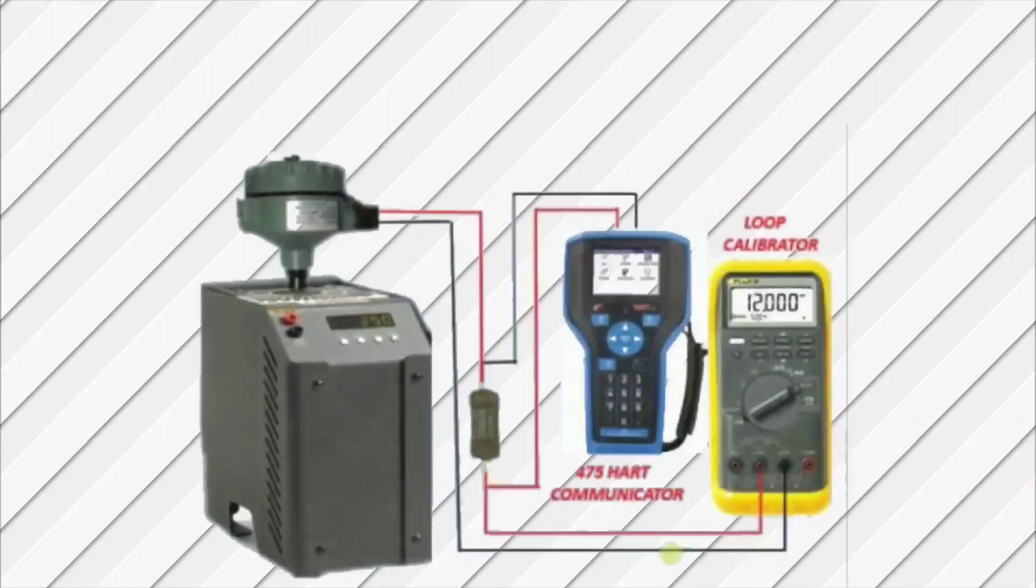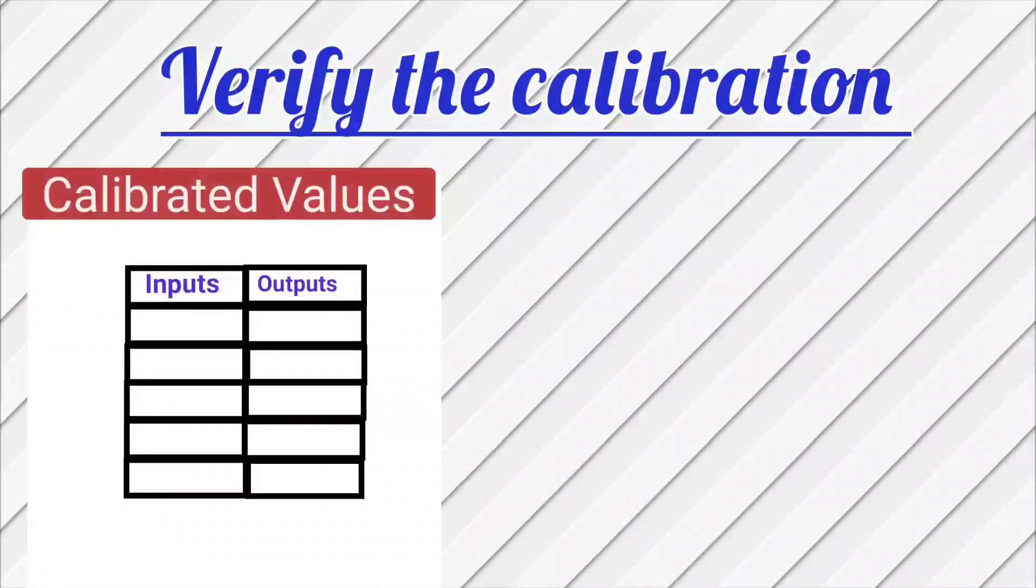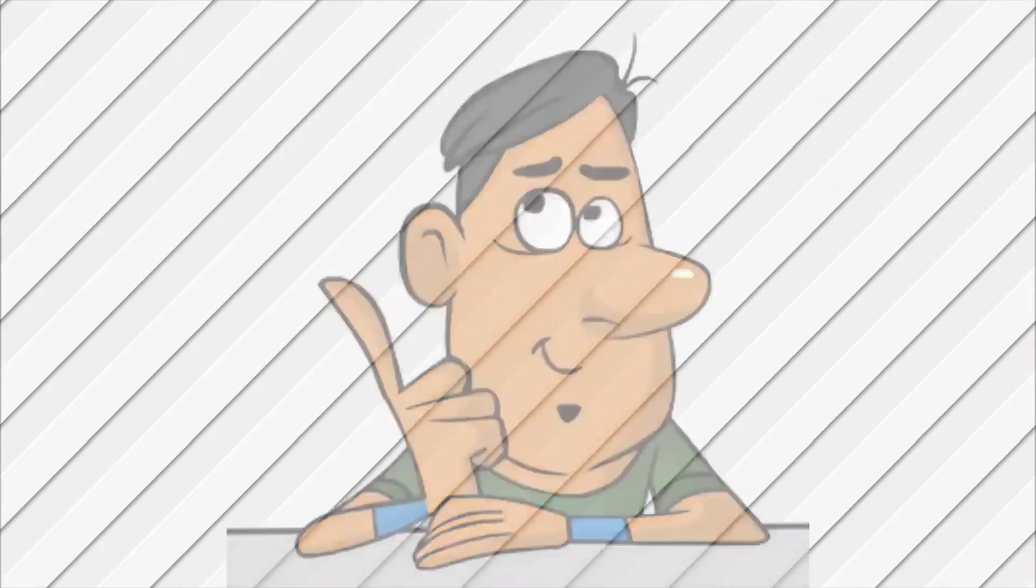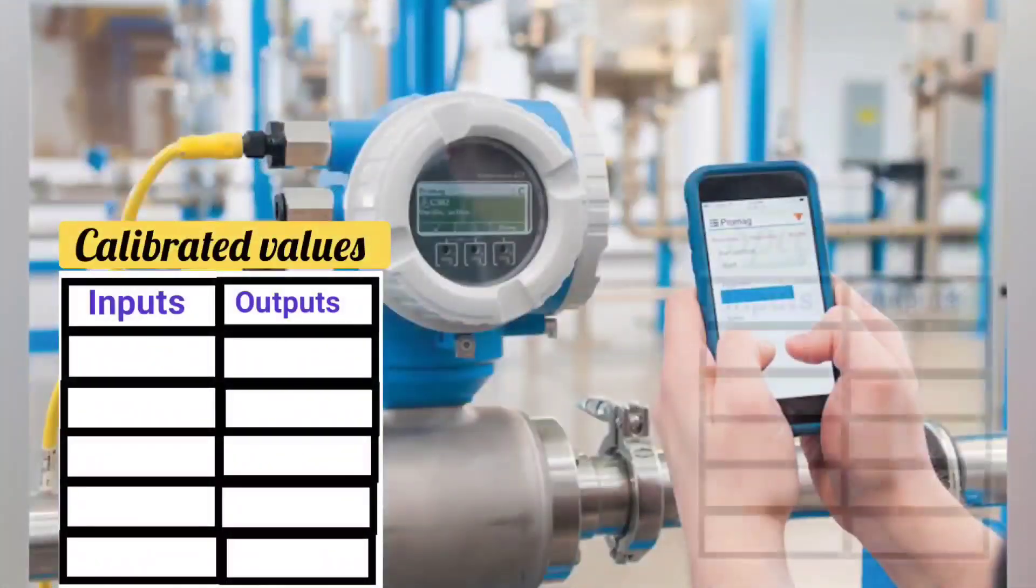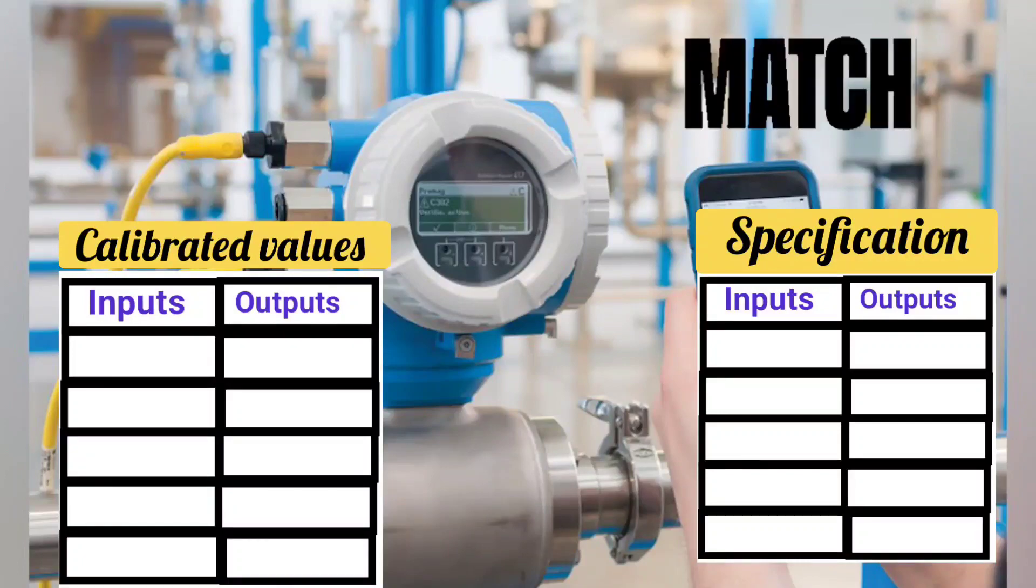Now move on, the next step is to verify the calibration. For this, the calibrated values are to be compared with the known standard or reference. It means that the device whose calibration is done, calibrated values and the specification sheet values are matched or not. It has to be verified.